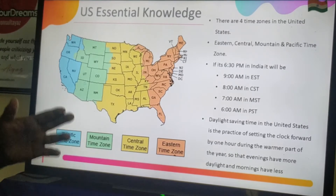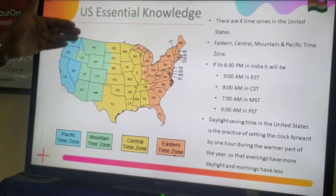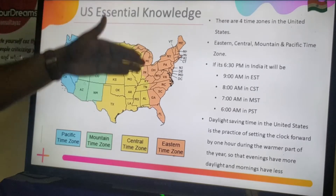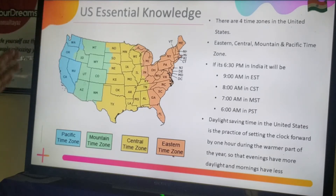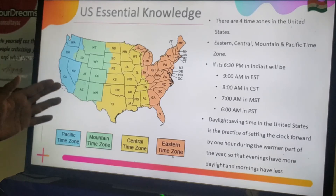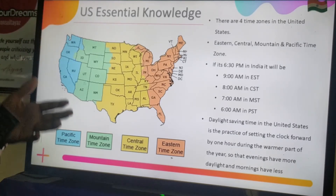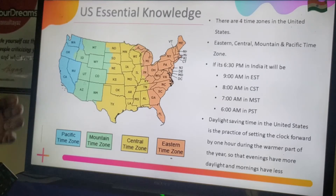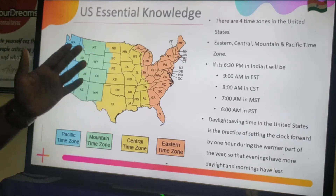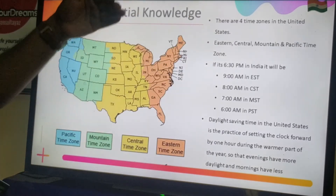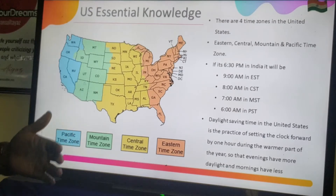It is important for recruitment professionals to have knowledge about the US map, geography, Eastern states, Central states, Mountain states, and Pacific states. When connecting with candidates through cold calling and emailing, you should know the current time in the candidate's time zone so they are available to pick up. Normal business calling hours are 9 am to 5 pm based on the time zone in which they are operating or residing.